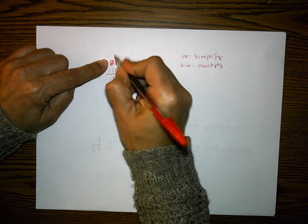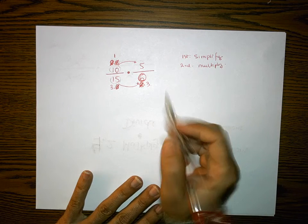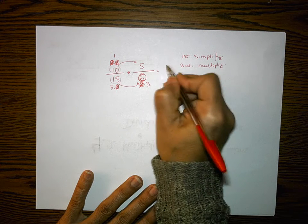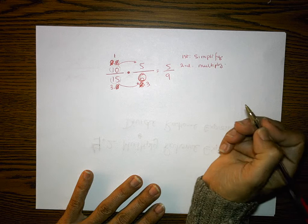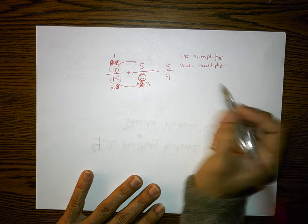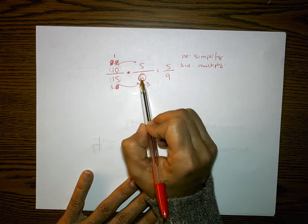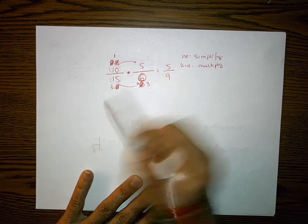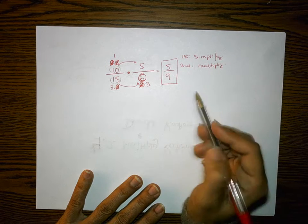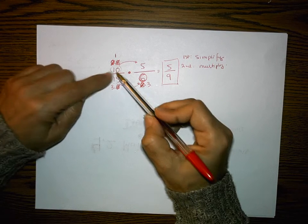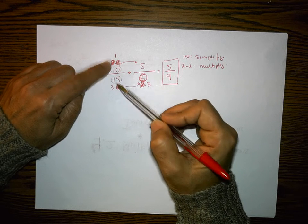After reducing completely — the 2 and the 5 — we're left with just a 1 in the numerator. Now multiplying is easy: 1 times 5 is 5, and 3 times 3 is 9, giving us 5/9. Whether you reduced first or multiplied big numbers first, you'd still get 5/9. The key idea: factor, see common factors, reduce, then multiply.